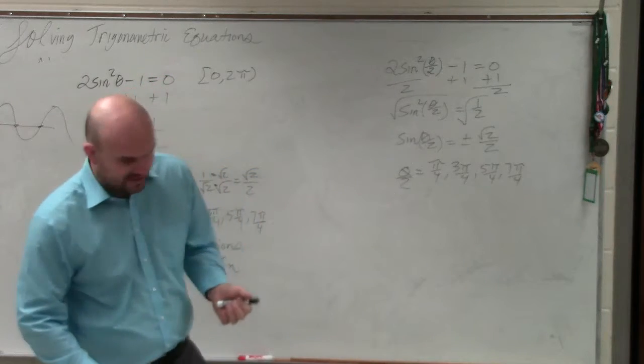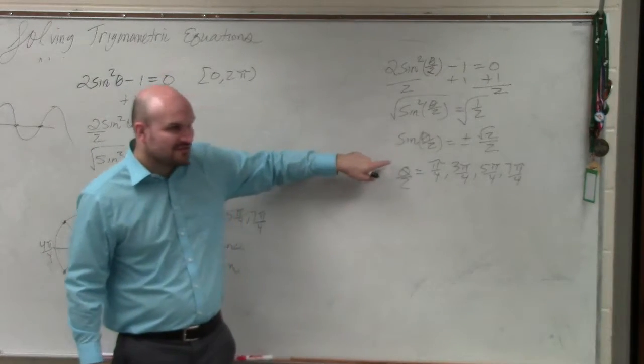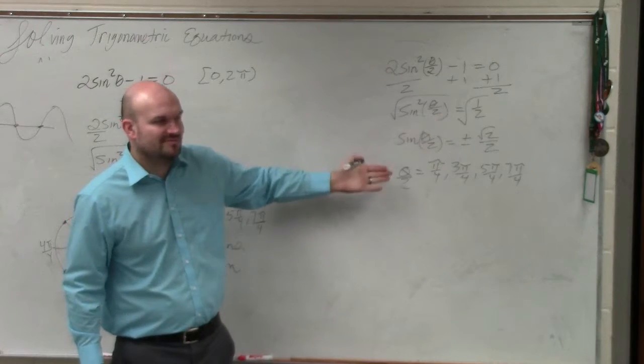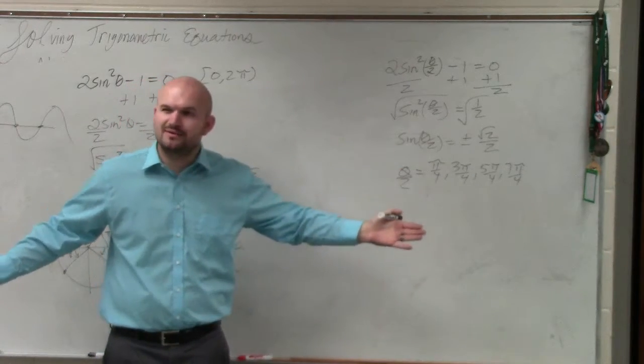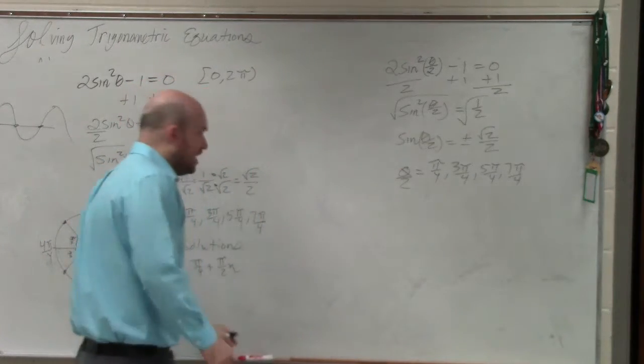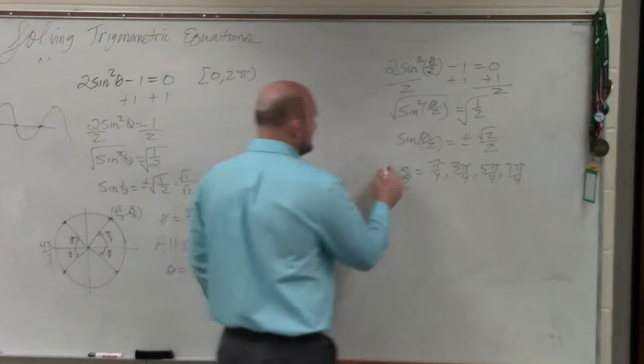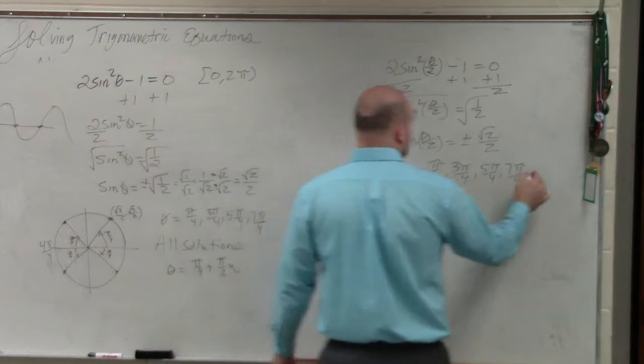So, when you're solving for this, now, we need to still solve for theta. We don't solve for x divided by 2, right? We solve for x. So we need to undo dividing by 2. So we need to multiply by 2.